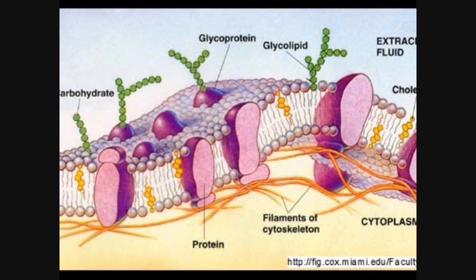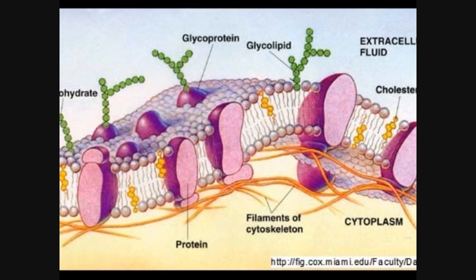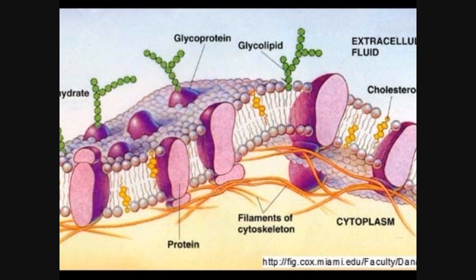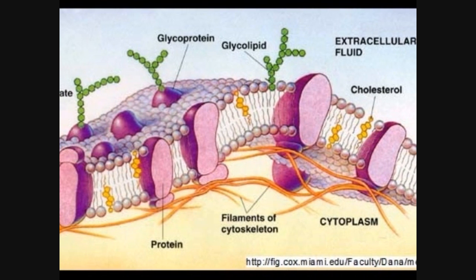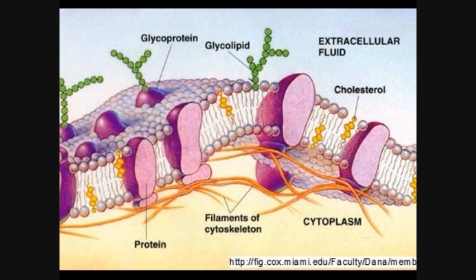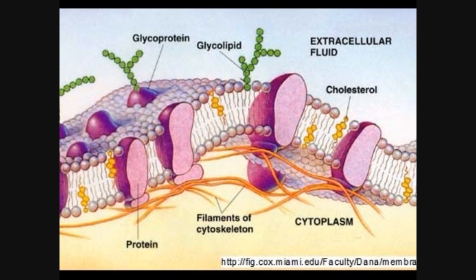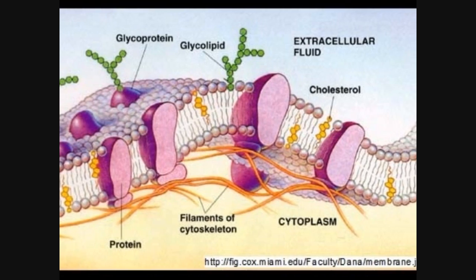The plasma membrane is present in all cell types and is composed of a lipid bilayer. It regulates what enters and leaves the cell and separates the internal from the external environment.